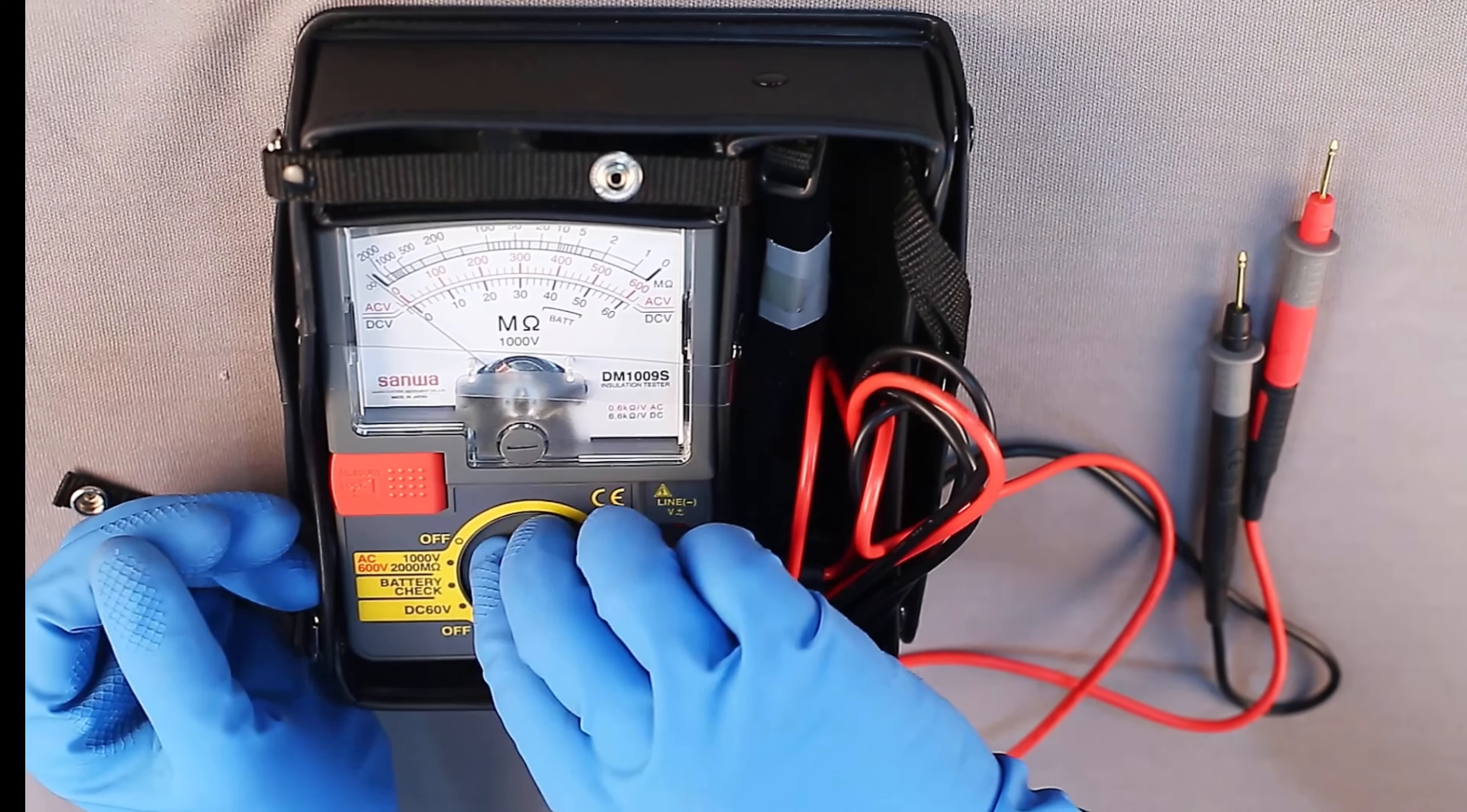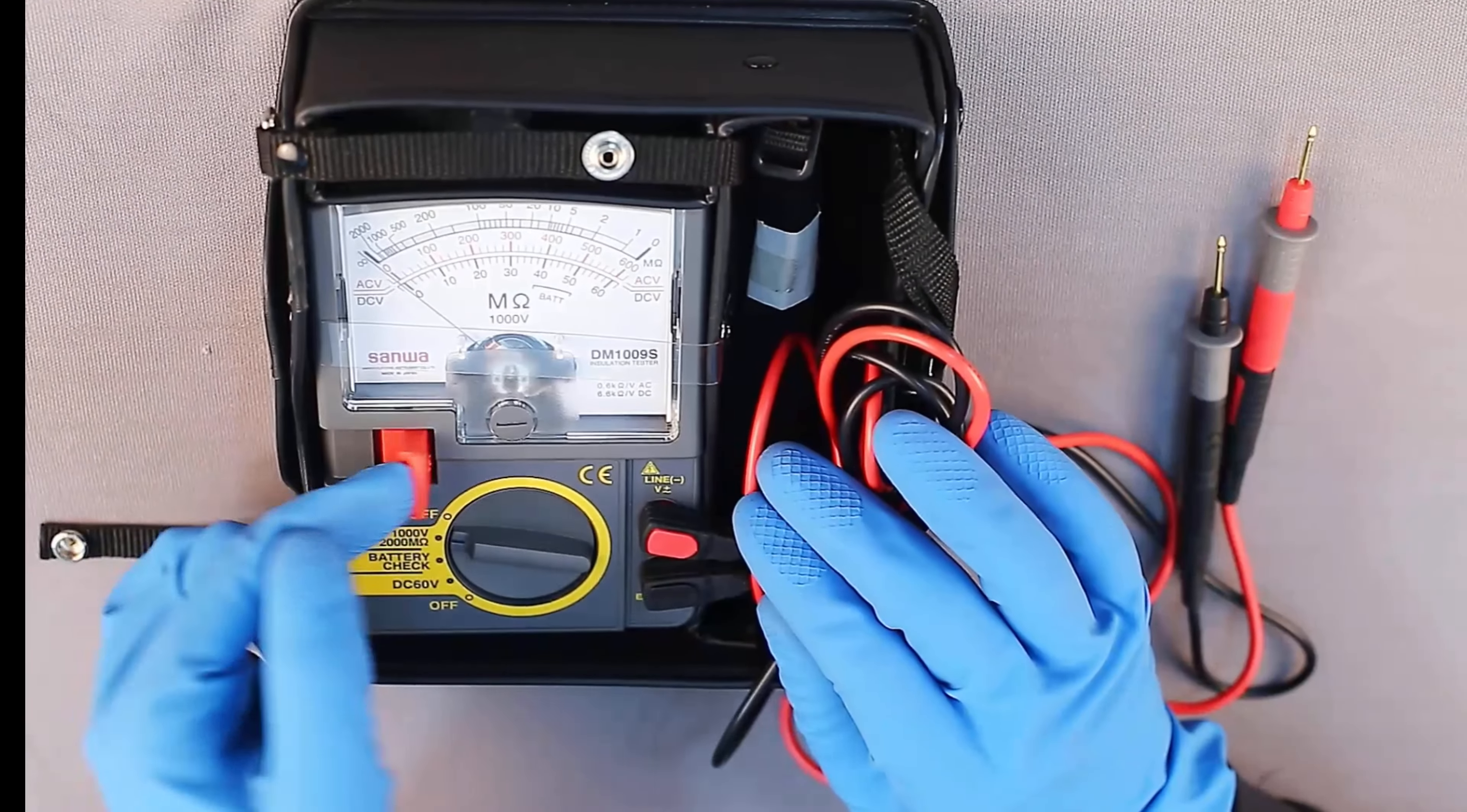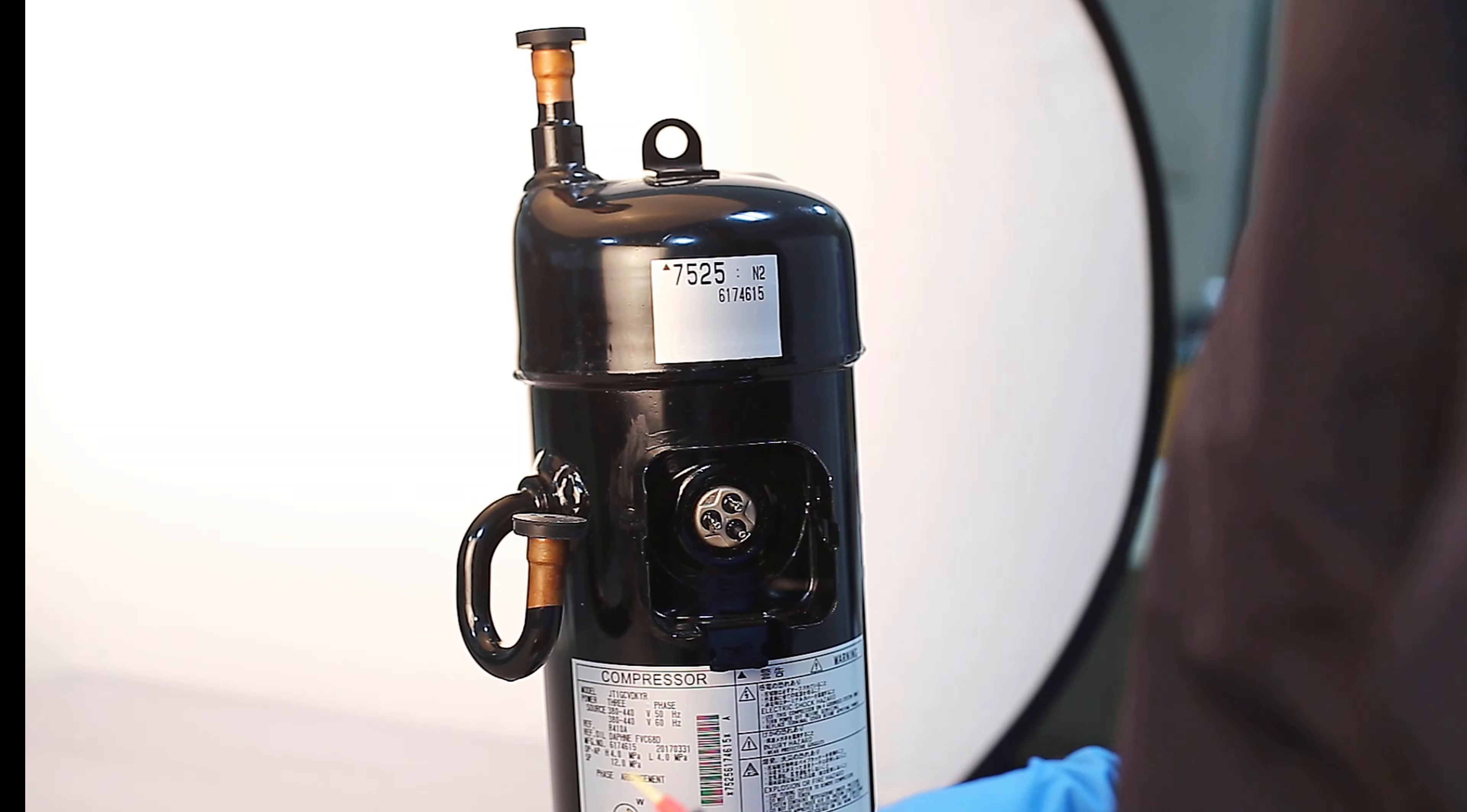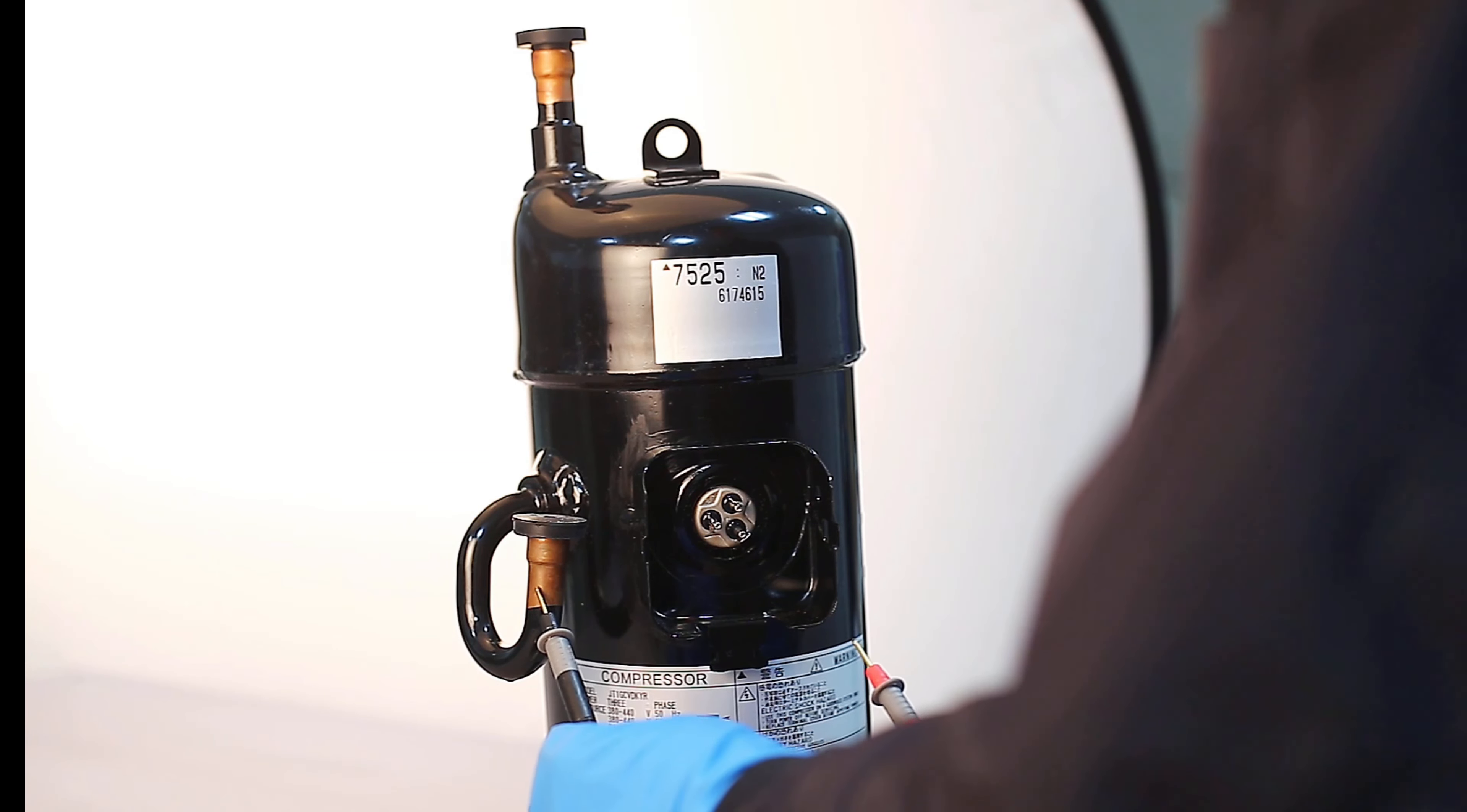Set the megger to 1000 volts as shown on the screen. Connect the black probe of the megger to the metal part.